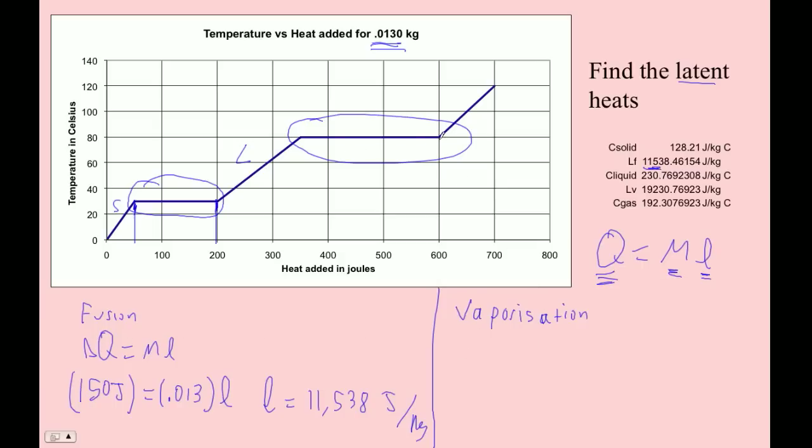The Q that flows in is 250 joules equals 0.013 kilograms times L. So now I'm going to go 250 divided by 0.013. And I get 19,230.7 joules per kilogram. So that's what that's supposed to be.